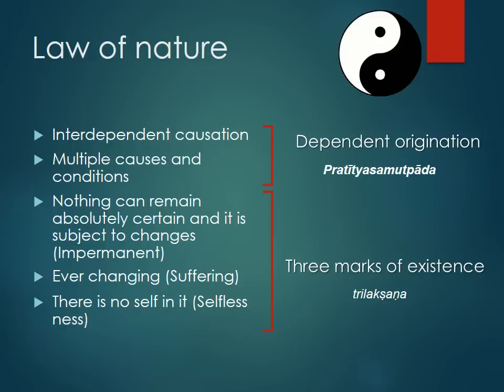To be able to solve problems generally and globally for this universe, we have to understand how the universe works — and it works through the law of nature. I would like to introduce the Buddha teaching called Dependent Origination. The main conclusion is that everything is interdependent. There are multiple causes and conditions for how things can occur — it doesn't occur by chance or randomly. If we know the causes, we can trace all the factors, and if we want something to occur, we should be able to make the right decision about that.